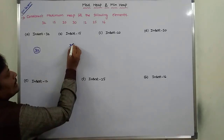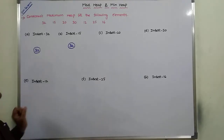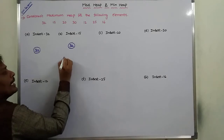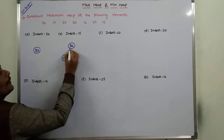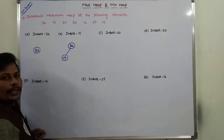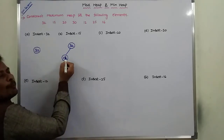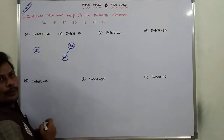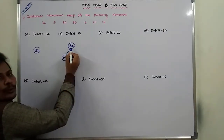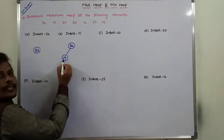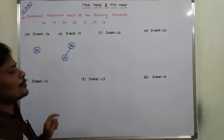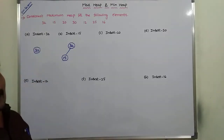Next, we have to insert element 15 into the existing maximum heap. Now, 15 can be inserted as a left child of node 32. Now, does it satisfy the maximum heap property? The parent node 32 is greater than 15, so the parent node's value 32 is greater than its child node's value 15. It satisfies the maximum heap property.